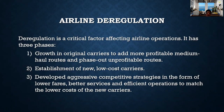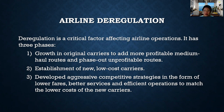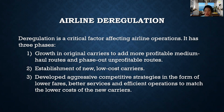Next is airline deregulation. Deregulation is a critical factor affecting airline operations. It has three phases. First is the growth of original carriers to add more profitable medium-haul routes and phase out unprofitable routes. Second is the establishment of new low-cost carriers — this is how Cebu Pacific, AirAsia, and Zest Air came to exist. Third is developing aggressive competitive strategies in the form of low fares, better services, and efficient operations to match the lower cost of the new carriers.